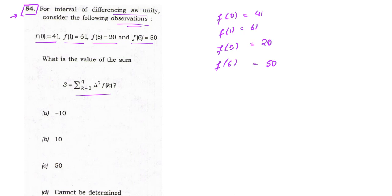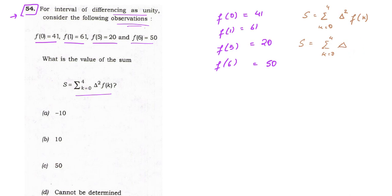What we need to find is summation from k = 0 to 4 of Δ²f(k). We will put all values from 0 to 4 and find the value of this summation. Let us simplify: summation k = 0 to 4. We take one delta, and this function becomes f(k+1) minus f(k), applying the differencing operator.